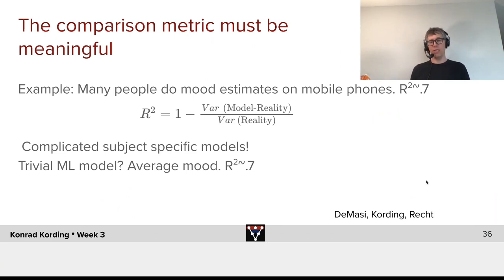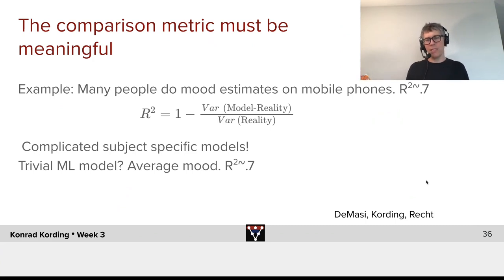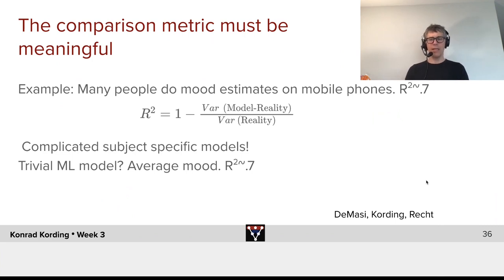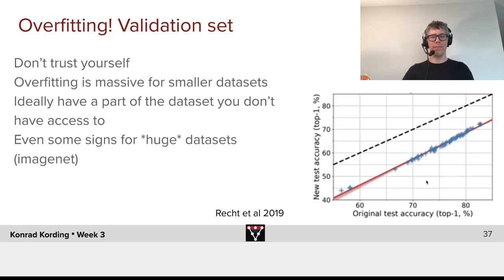So here we have an outcome metric that makes it look like machine learning is almost magic — R-squared of 0.7, why even ask people how they feel? Well, this is completely useless information. It's just reporting what the average is. What we found during a large meta-analysis in that area is that quite a lot of machine learning in this space isn't better than simply guessing the average of a person.